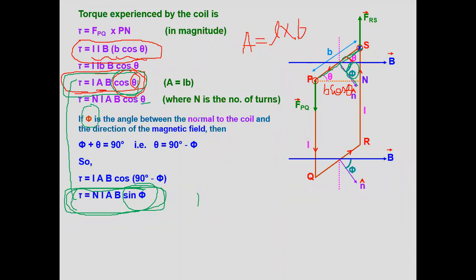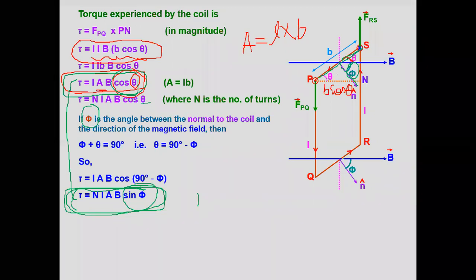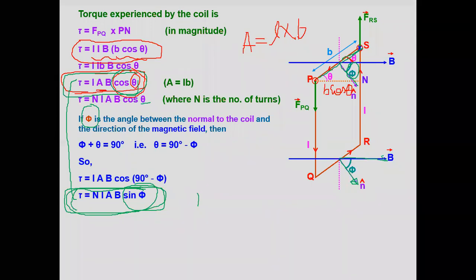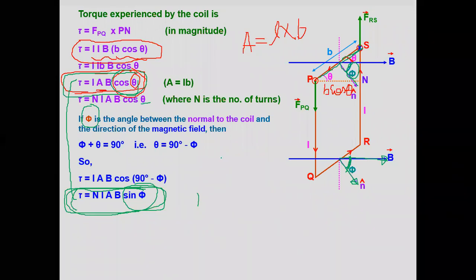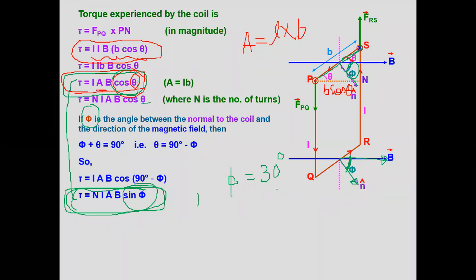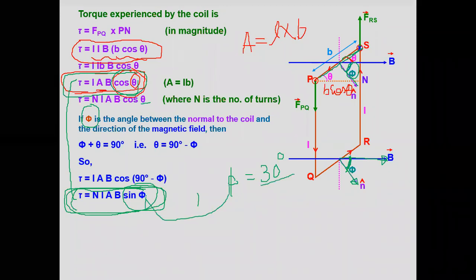The normal of the coil is in one direction, and the magnetic field is in another direction. The angle between the normal to the coil and the magnetic field is your φ. So whenever φ is given, for example: 'find the torque when the angle between the normal to the coil and the direction of magnetic field is 30 degrees,' you use the φ equation directly.